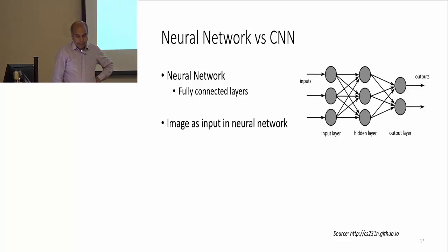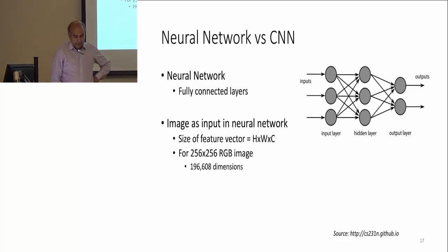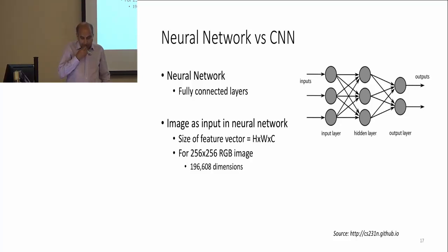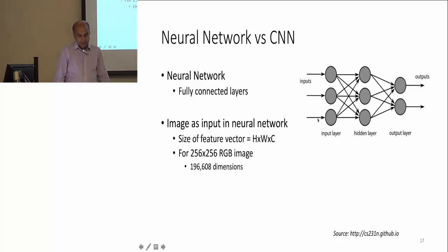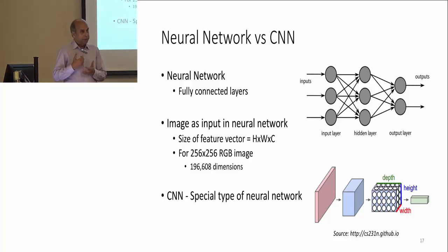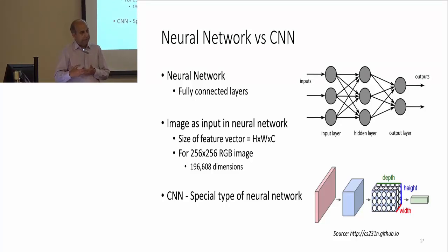When an image is the input to a neural network, the size of the image converted to a vector is very large. For example, a 256x256 image — a very small size — gives you about 196,000 dimensions. This leads to an enormous number of fully connected connections. So instead of fully connected layers, most image layers use convolutional neural networks, applying a mask or kernel similar to finding derivatives or applying a Gaussian filter.